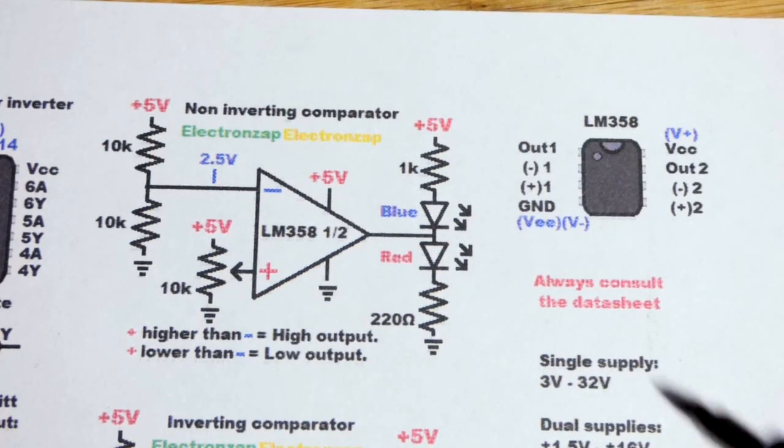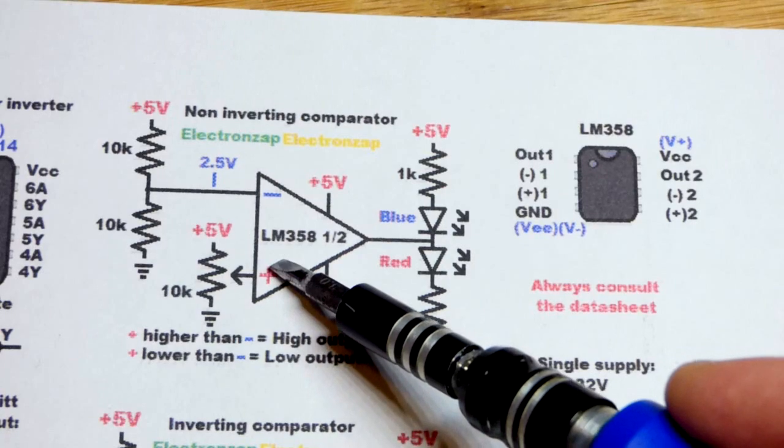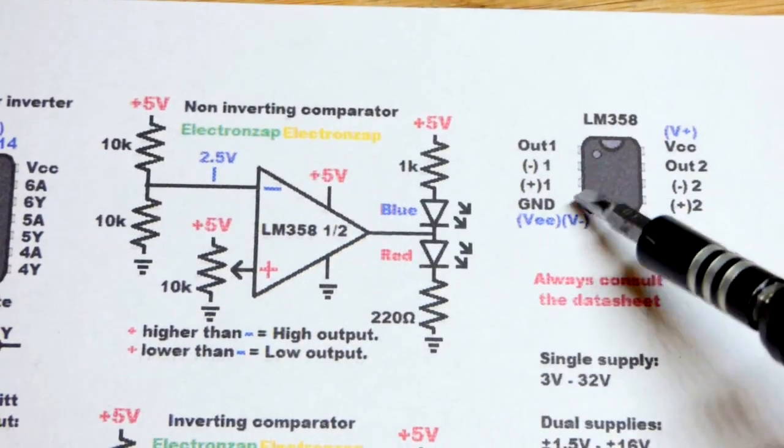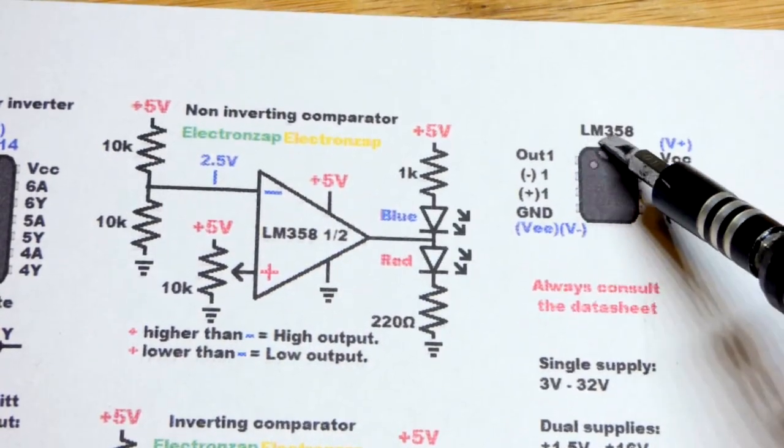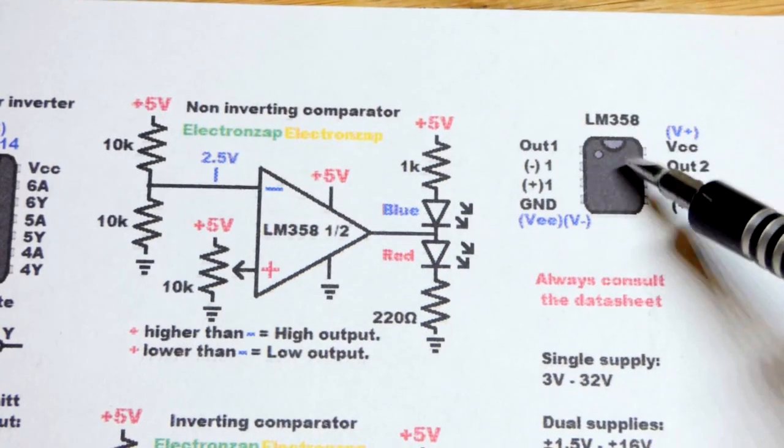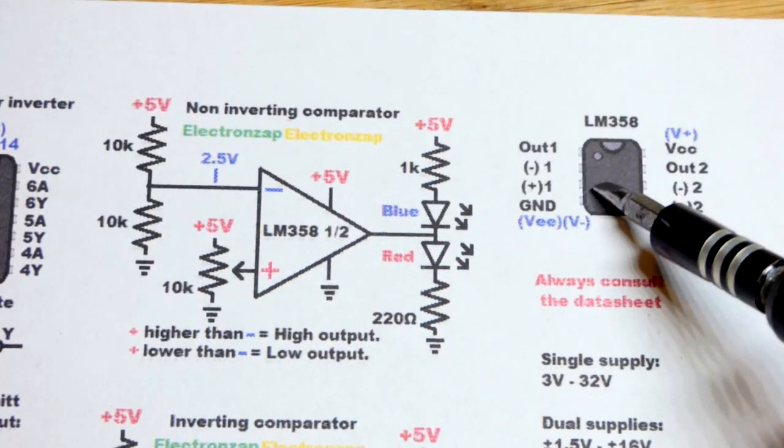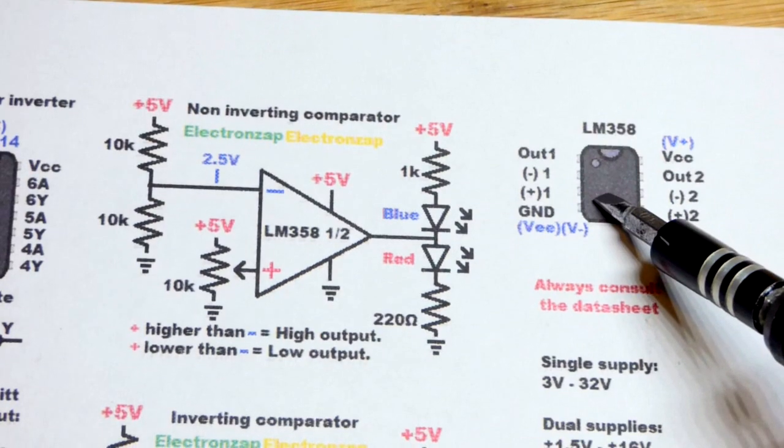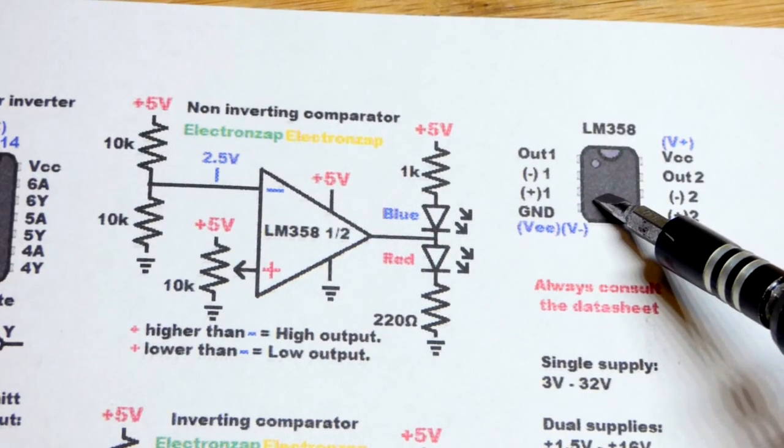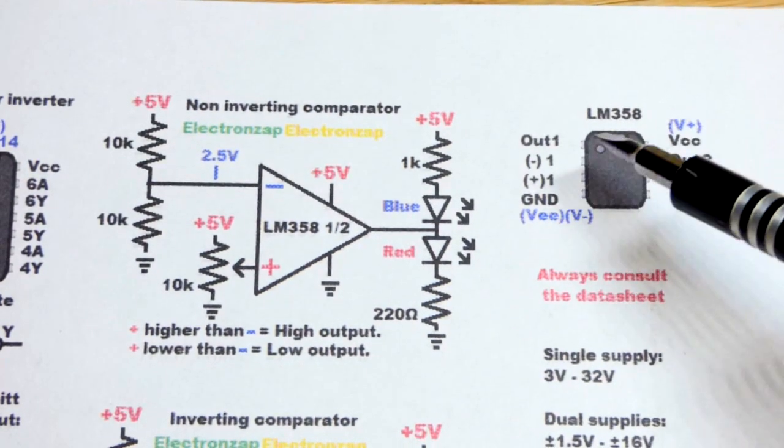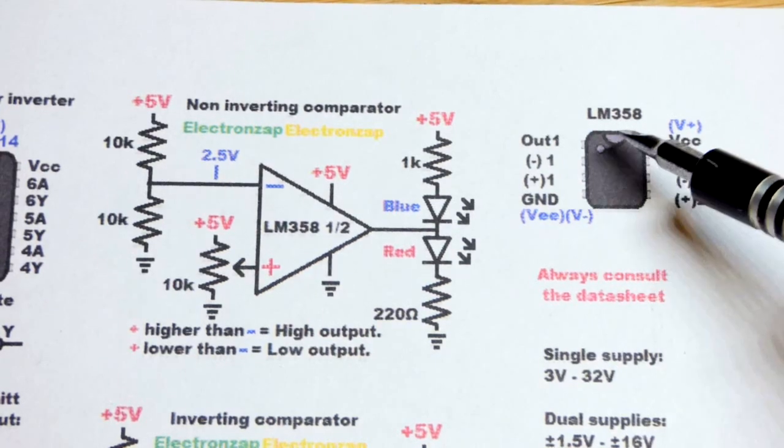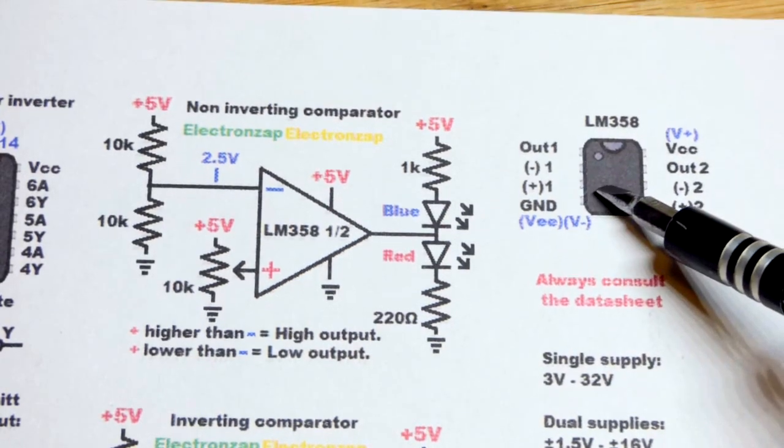And now we come to the diagram. So, we have the schematic here of the non-inverting comparator. Here is the pin layout for the LM358 op-amp. Remember, this is an op-amp. It's not a comparator integrated circuit. There are comparator ones, but the op-amp can make a comparator too. Generally speaking, op-amps can be comparators and op-amps, and comparators can just be comparators.